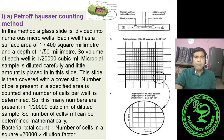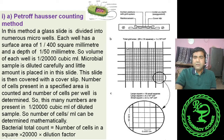First, we will discuss the Petroff-Hauser counting method. In this method, a special type of glass slide is used — this type of slide is also used for counting blood cells. In one square millimeter area, each arm of the square is divided into 20 parts. So each small square has an area of 1/400 square millimeter (1/20 × 1/20 = 1/400 square millimeter).